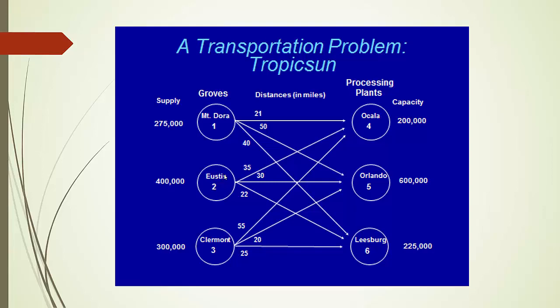So the decision here is going to be about, for example, how many bushels of citrus in Mount Dora location 1 will be transported to location 4, 5, and 6 respectively. Similarly, how many bushels of citrus from location 2 will be transported to location 4, 5, and 6, and so on and so forth.